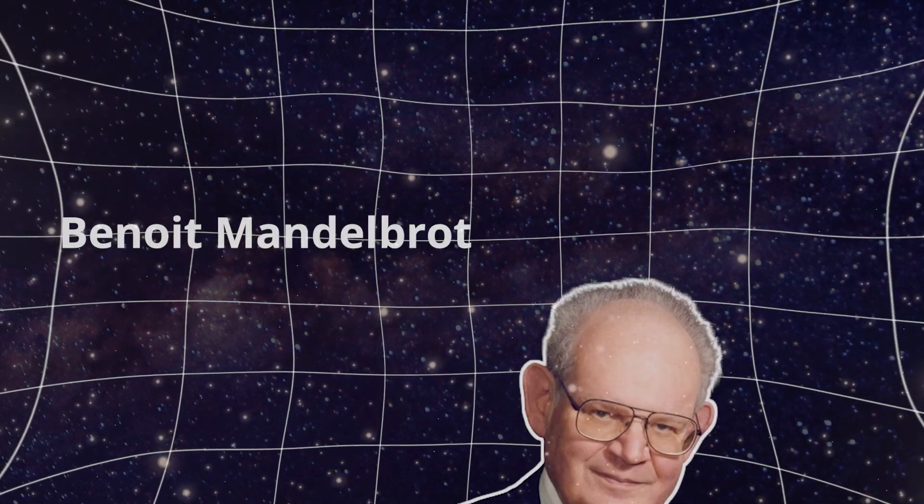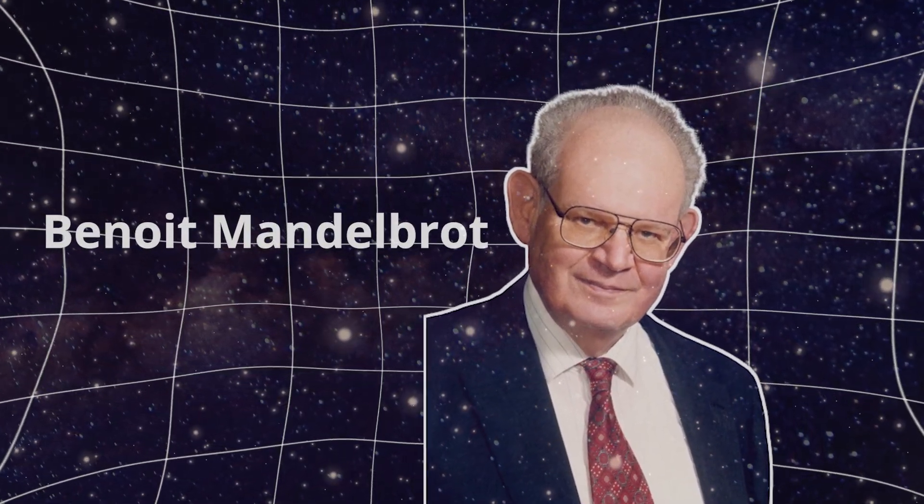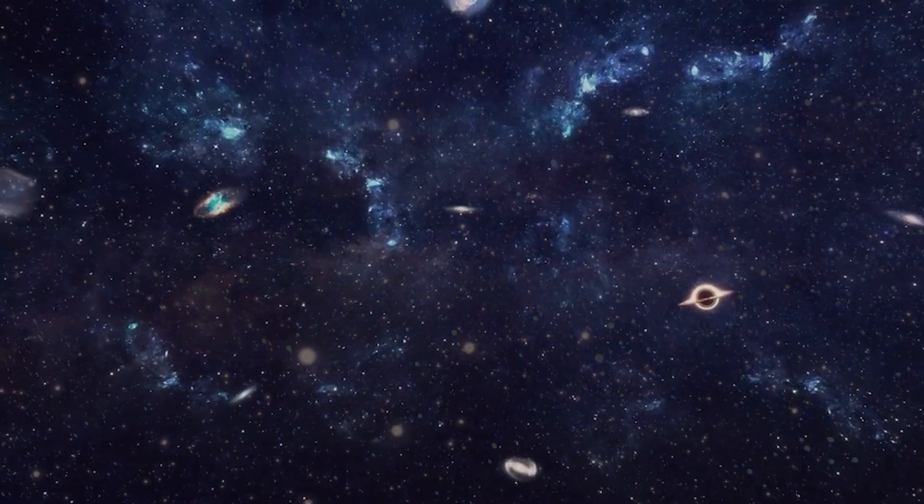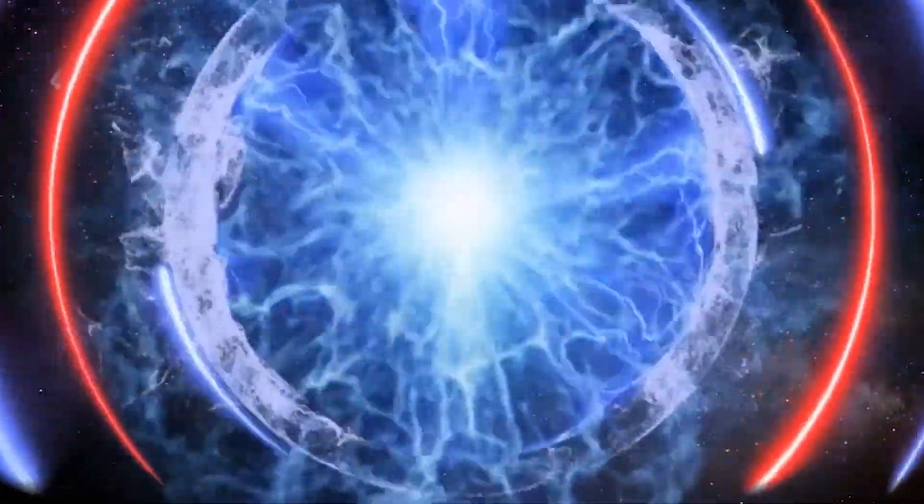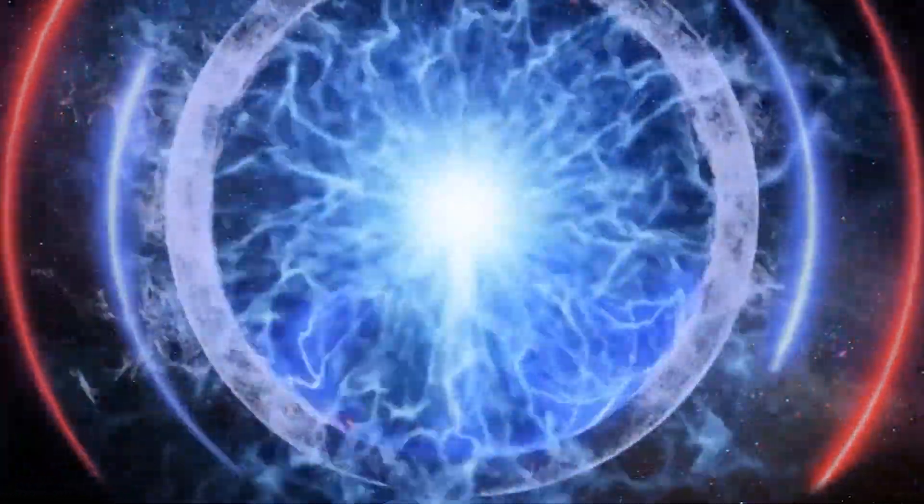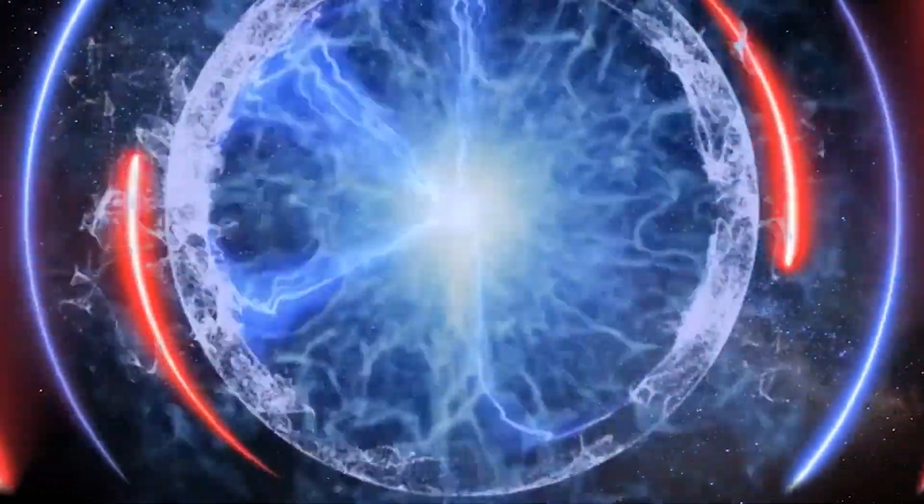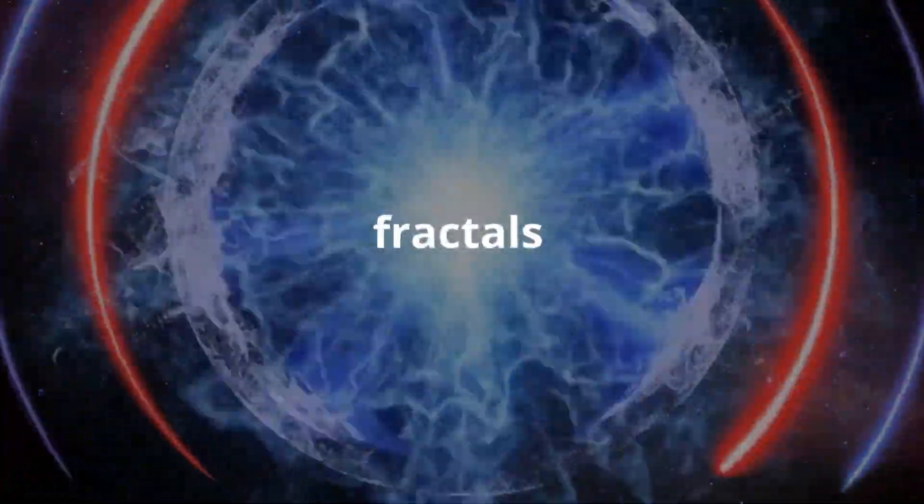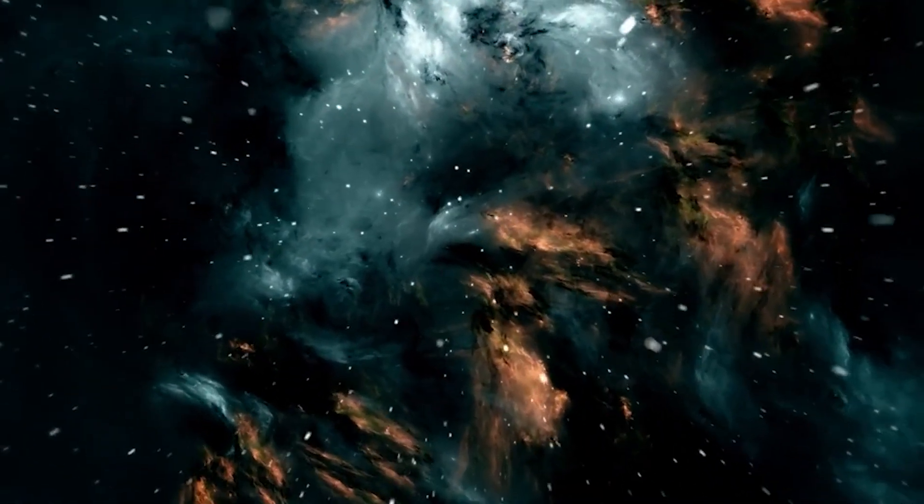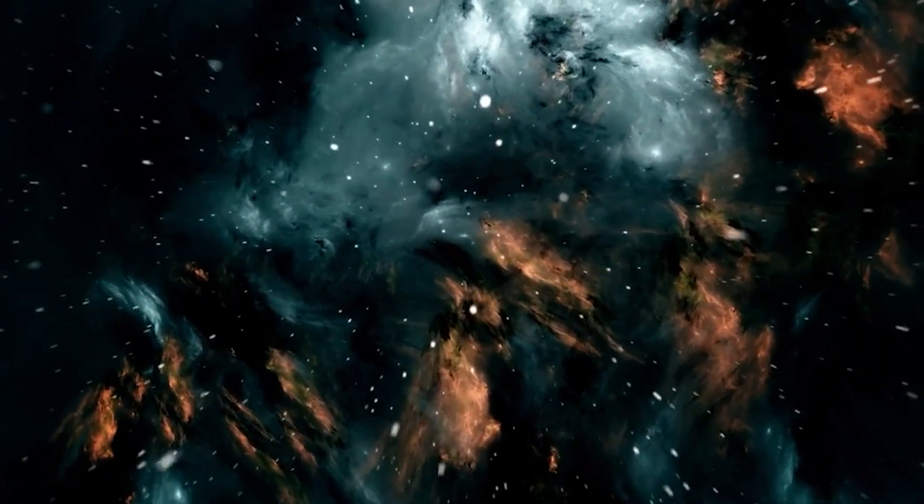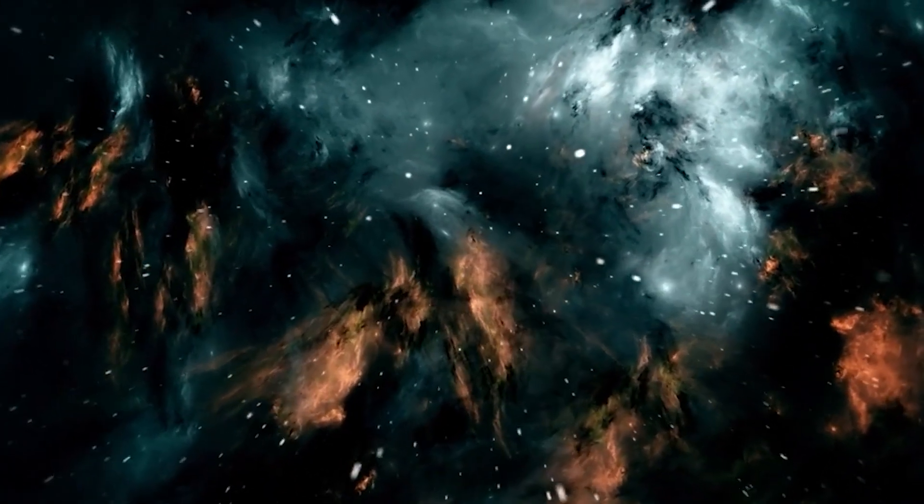Benoit Mandelbrot was a Polish mathematician who saw beauty and order in the chaos of the natural and human world. In 1958, he moved to New York and began working at the IBM Research Center, a place not to improve computers, but to revolutionize mathematics with them. It was there that he began to explore fractals using computer graphics. And what are fractals? They are incredibly complex structures that you can zoom in on infinitely, and they never simplify. There's always more detail, no matter how close you look.